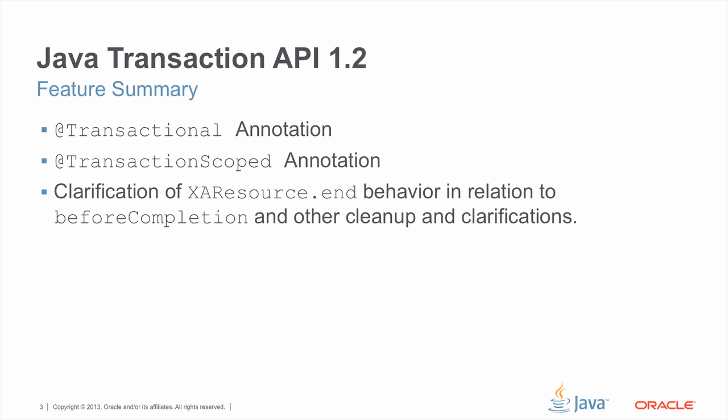This is a feature summary of what is new in JTA 1.2. There are really two new features and some clarification and cleanup. The first is the @Transactional annotation. The second is the @TransactionScoped annotation. The clarifications include things such as version number updates and the clarification of XA resource and in-before-completion — behaviors that application servers have always had but were never explicitly spelled out in the specification.